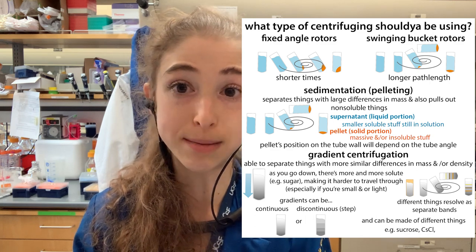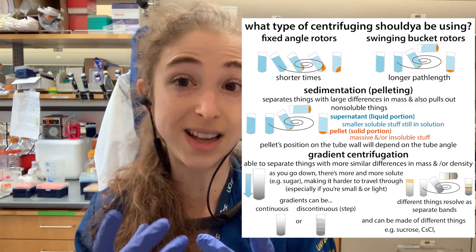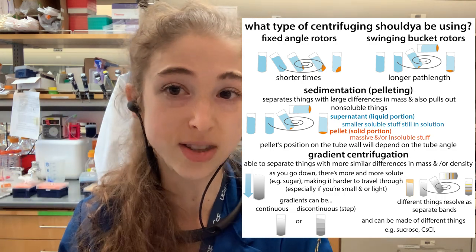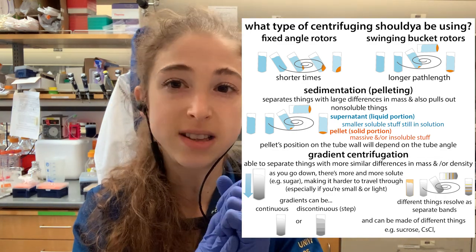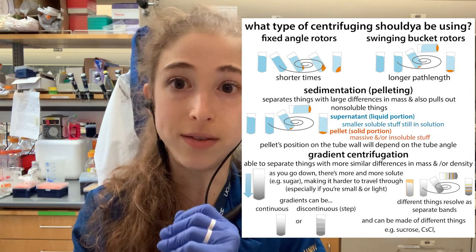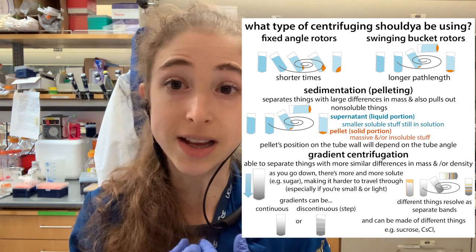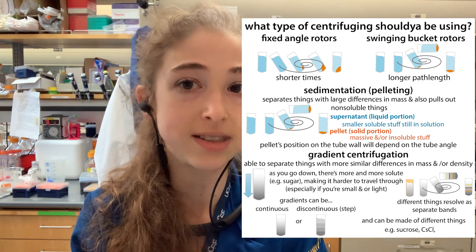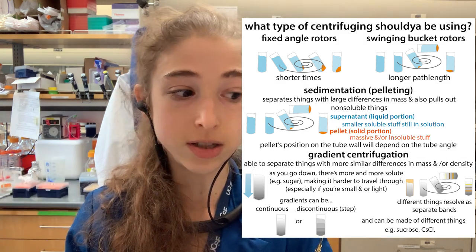We use both for pelleting — when you have a really big difference between the densities and masses of things you're trying to separate, they do a bulk separation. This is helpful if you lyse open cells and want to get rid of cell debris or pellet out insoluble stuff. But when you want to separate different proteins, complexes, or organelles, then you turn to an ultracentrifuge and use some sort of gradient — like a sucrose gradient or a cesium chloride gradient — which separates things out better.